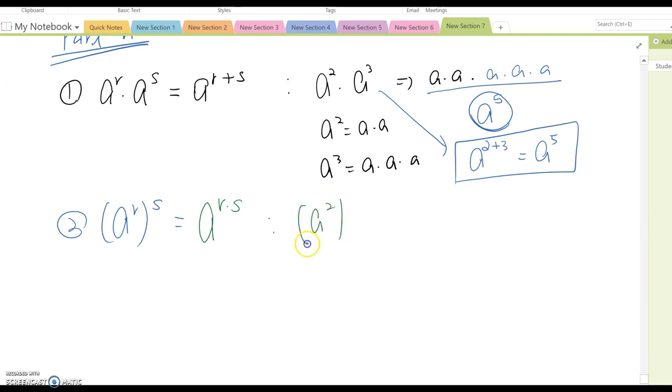One example. A squared to the 3rd power which means you are multiplying A squared three different times. As we already talked about A squared means A times A. So, you can rewrite this expression A times A, A times A,